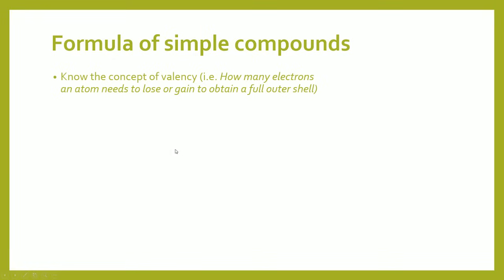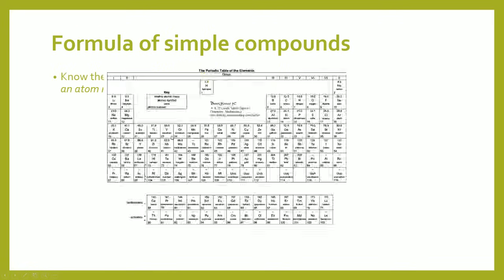First of all, you need to know how to construct the basic formula of a simple compound. To do this, you need to know or understand the concept of valency, which is basically how many electrons does an atom need to lose or gain to obtain a full outer shell.